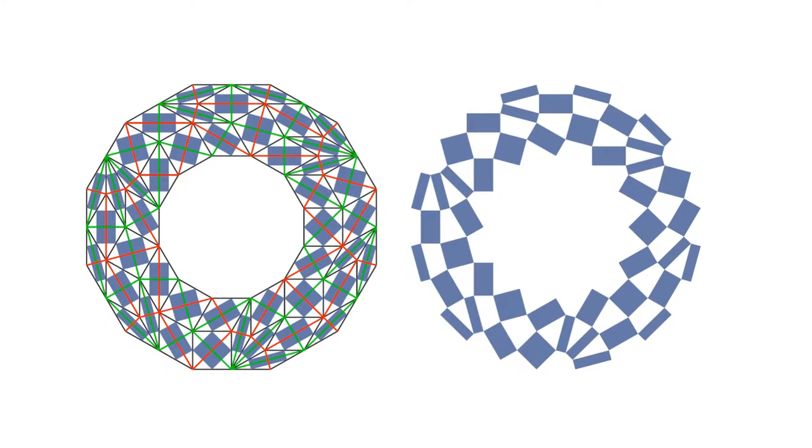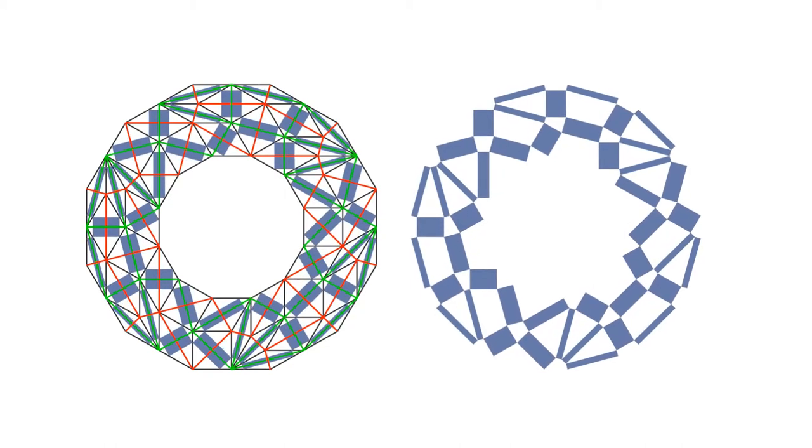With the two diagonal meshes fixed, we get a family of checkerboard patterns by interpolation between the two diagonal meshes.